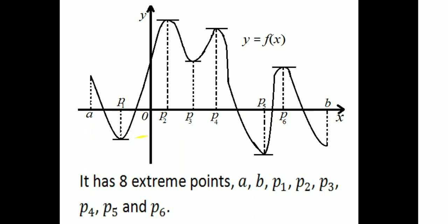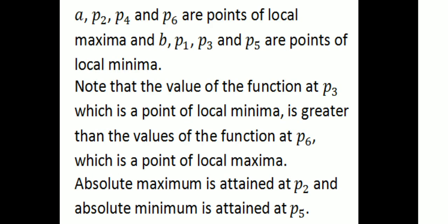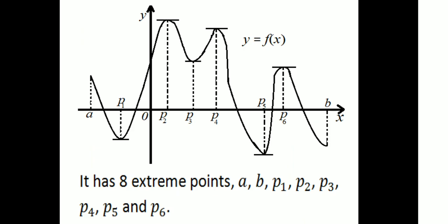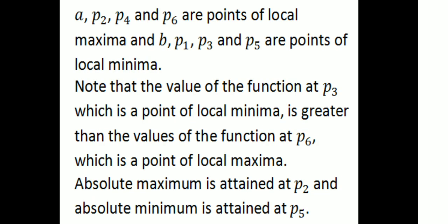The 8 extreme points are A, B, P1, P2, P3, P4, P5, and P6. Among these, A, P2, P4, and P6 are points of local maxima, and B, P1, P3, and P5 are points of local minima.